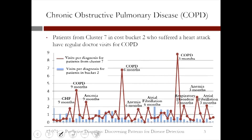The next pattern reveals an increasing occurrence of chronic obstructive pulmonary disease, COPD for short. Patients from cluster 7 in bucket 2 have regular doctor visits for COPD. Nine months before the event we have 4.5 visits versus 0.5 visits; six months before, almost 7 visits versus half a visit; and three months before, 9 visits versus half a visit — a clear increasing pattern.